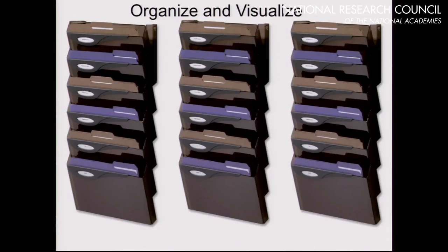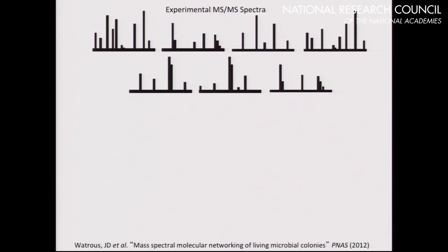Whenever you deal with big data, with large volumes of data, there are two things you have to think about. First, you have to organize and then visualize it, because if you can't visualize it, you can't interpret it, you cannot create a hypothesis. Mass spectrometry, particularly fragmentation data, has an inherent organization principle.